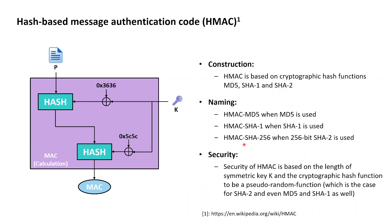How does HMAC really work? Let's have a look at the flowchart on the left. HMACs are calculated for a plaintext and under a given key, so the HMAC calculation takes two inputs: a plaintext and symmetric key K. Internally, the symmetric key K first gets all of its bits XORed with the bit string represented in hex as 0x3636. The result of this XOR is then concatenated with the plaintext, and this concatenation is then hashed by the underlying hash function.